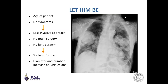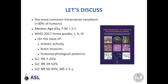Let's see what the literature says about metastatic meningiomas. First, let's revise what a meningioma is. It is the most common intracranial neoplasm, accounting for more than 30% of intracranial neoplasms. The median age at diagnosis is 65 years, with a female-to-male ratio of 2 to 1. The 2017 WHO Blue Book classifies meningiomas in three grades — 1, 2, and 3 — based on mitotic activity, brain invasion, and histomorphological patterns. The higher the grade, the higher the recurrence rate, and anaplastic meningiomas have a median survival of 2 to 5 years.